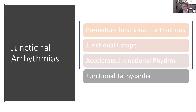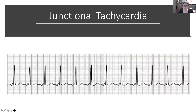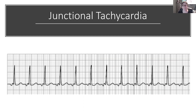Junctional tachycardia — the fourth of four rhythms. Here we have an example of junctional tachycardia. It looks pretty regular at first glance; it looks like it could be a sinus tachycardia, but what we're seeing is this inverted P wave. If I haven't said 'inverted P wave' enough times for you to associate it with junctional rhythms, I haven't done my job. That is a classic hallmark.